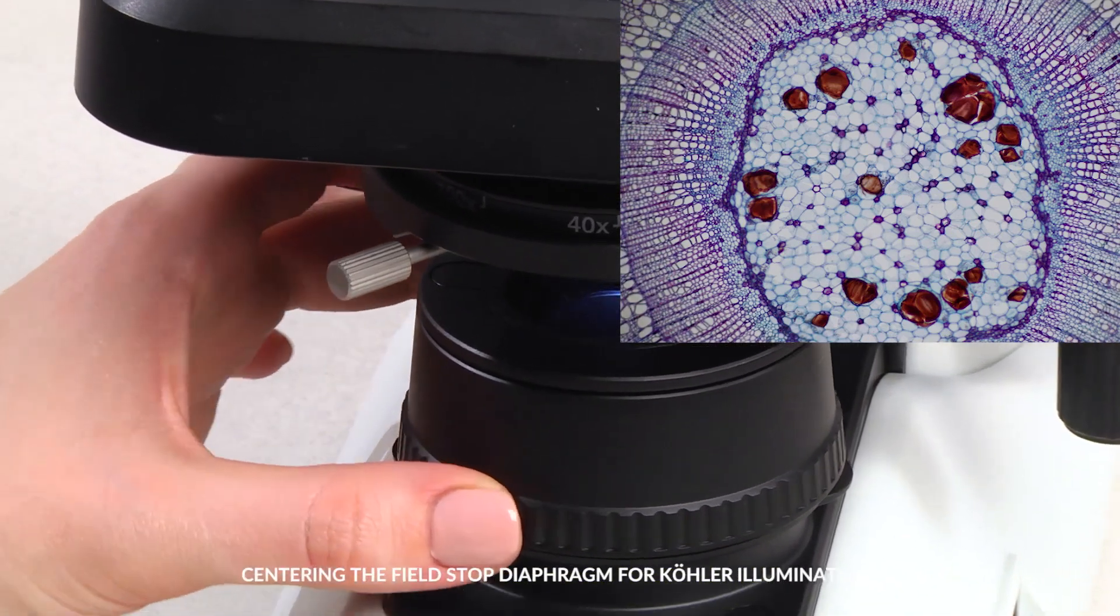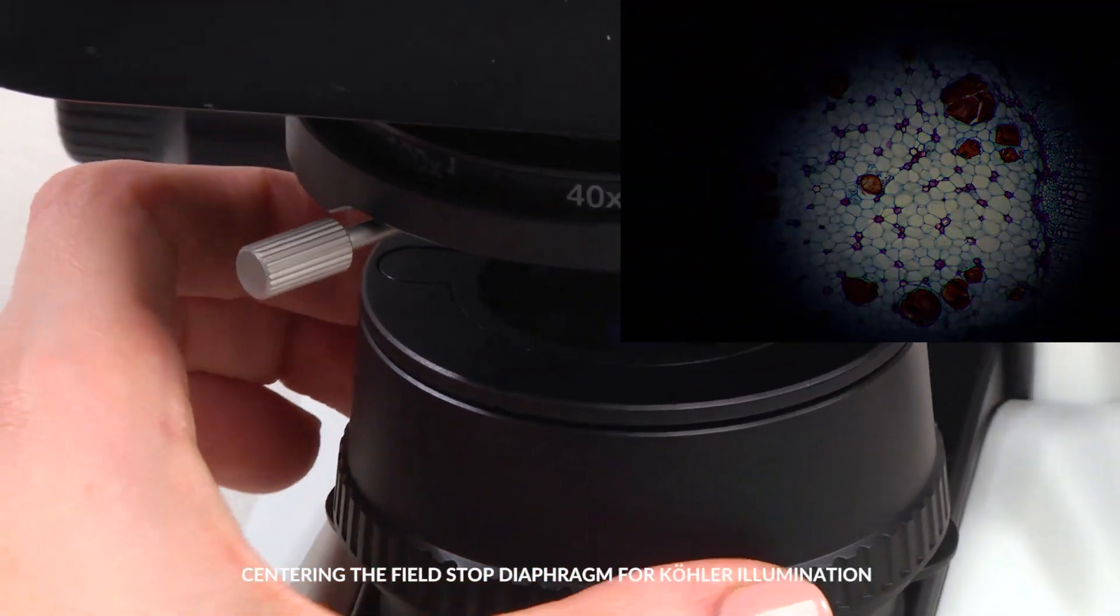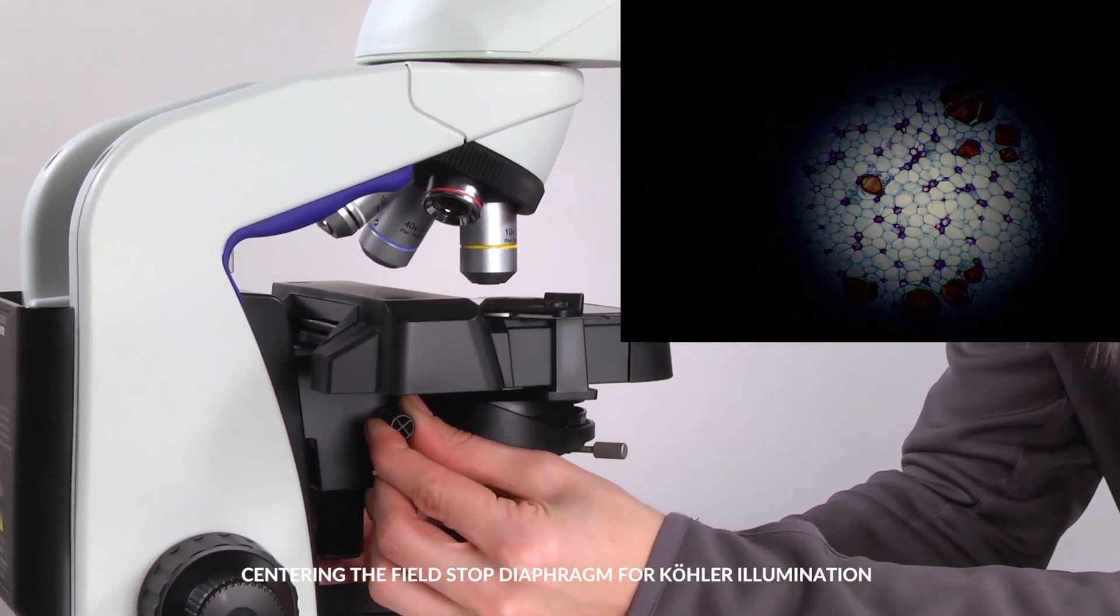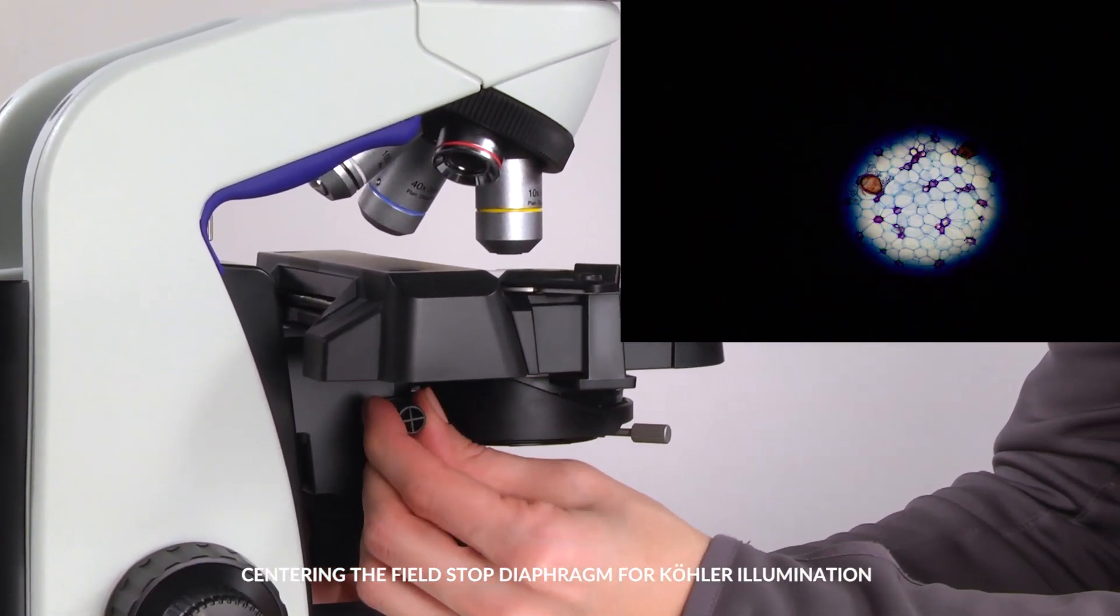Rotate the field diaphragm to the right to narrow the diaphragm image. Rotate the condenser height adjustment knob to bring the field diaphragm image into focus.